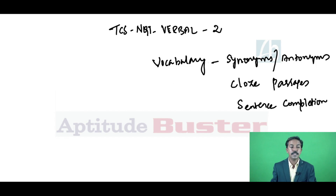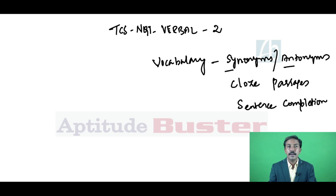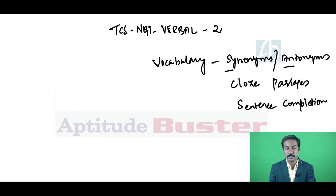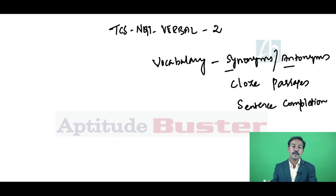Of these three prominent question types, the first one — synonyms and antonyms — is slightly challenging because unless you know the meaning of a word, it's very difficult to answer it. In terms of clues, it's very limited. Probably you can rely on prefix, suffix, or the etymological approach. When it comes to words tested as synonyms or antonyms, it's very vast, and within a short time it's very difficult to discuss all possible words — rather than cloze passages and sentence completion.